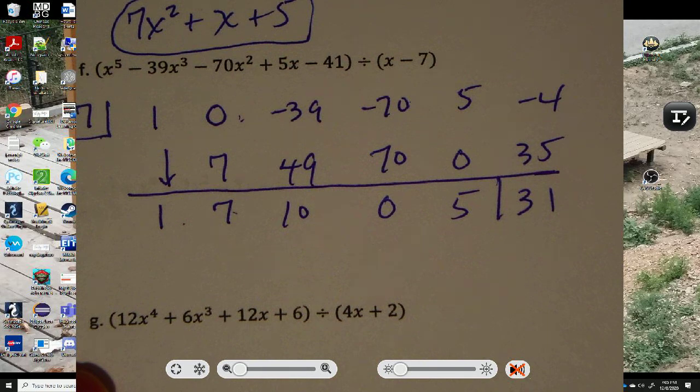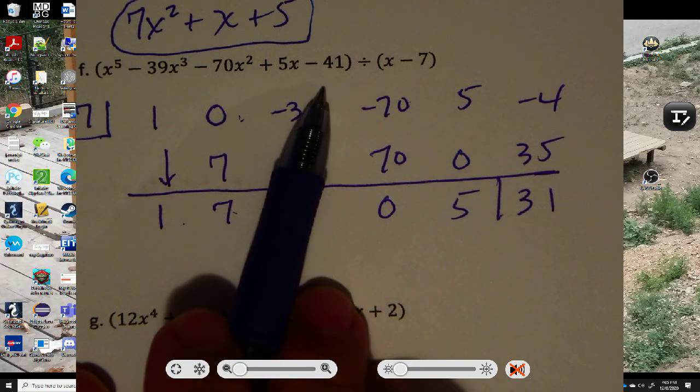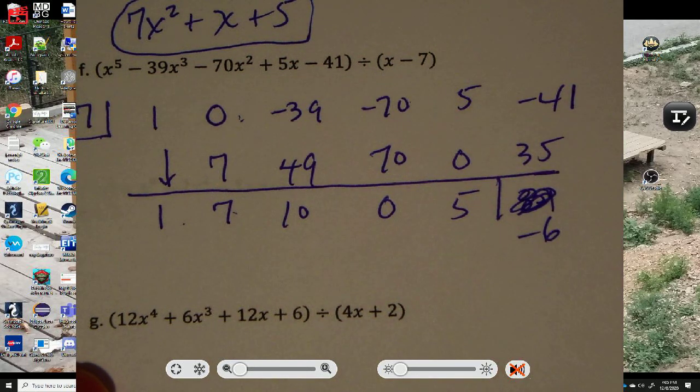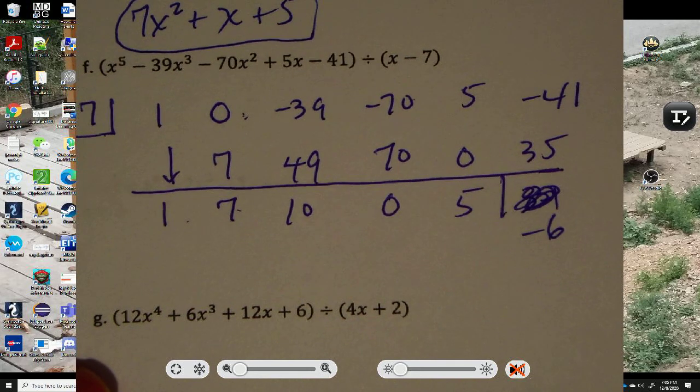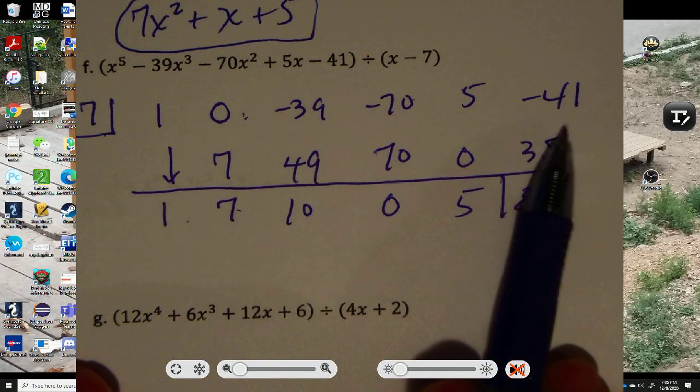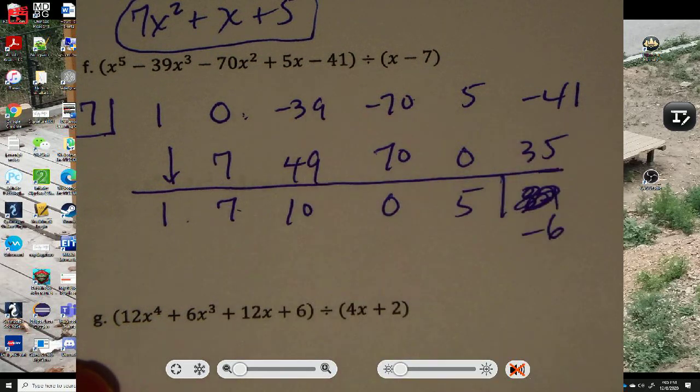Really? Yeah. So this time I have a remainder of 31. Oh. I copied the problem wrong. It's negative 41, not negative 4. So instead of 31, it's negative 6. I made the most common error. Copying the problem incorrectly. Alright. Some of you probably are like, oh, Mr. S. Roger, you copied it wrong. Well, I caught it. So final remainder is negative 6.